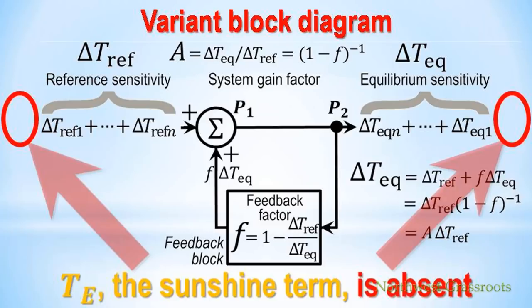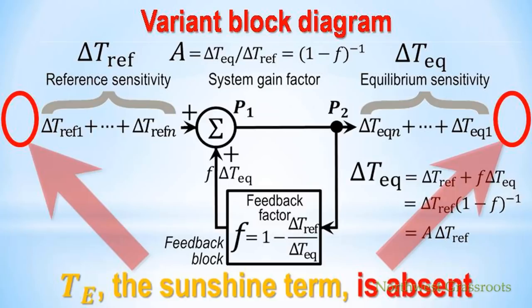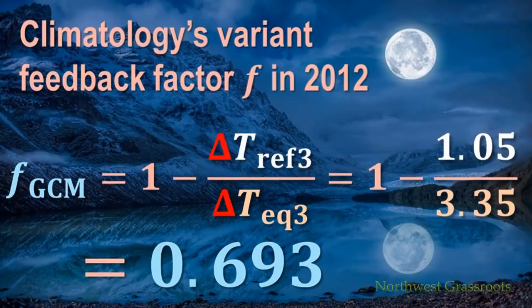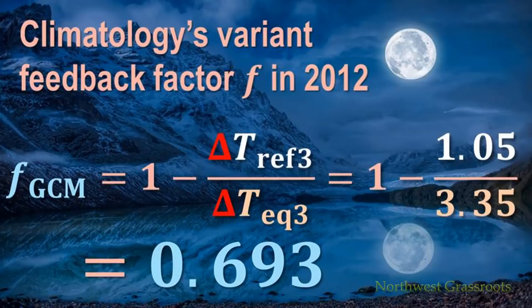Funnily enough, this equation is still a true equation. And we'll show you why later. But it doesn't give you enough information to enable you to find out what the feedback factor actually is. Here is the feedback factor that they calculate. You'll see it's 1 minus 1.05 divided by the equilibrium temperature change, 3.35. And that gives you 0.693, a very big feedback factor. Remember that figure, 0.693. That is what climatology says it is. But that's not mainstream science. And we're going to show you why as we carry on with this presentation.